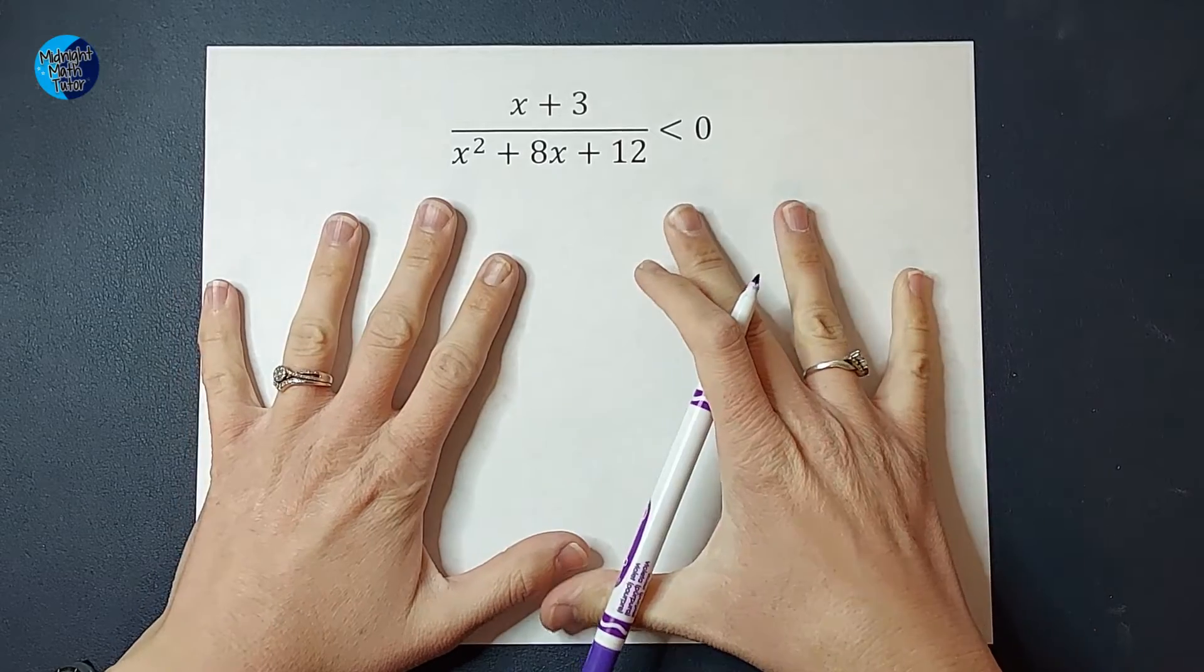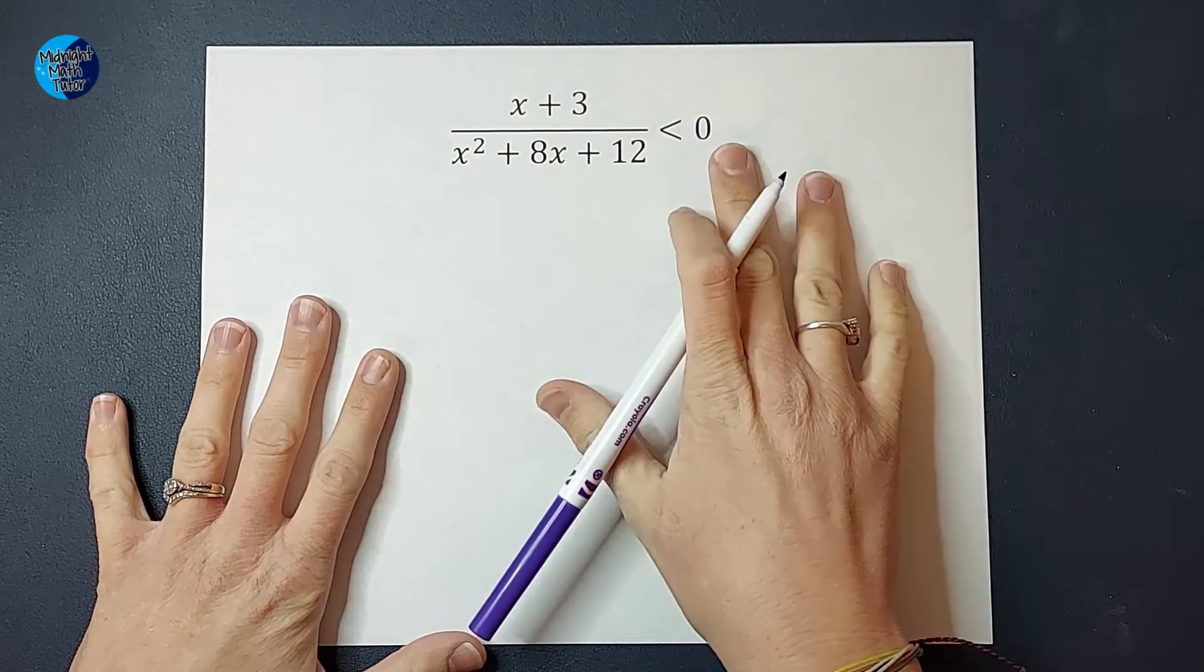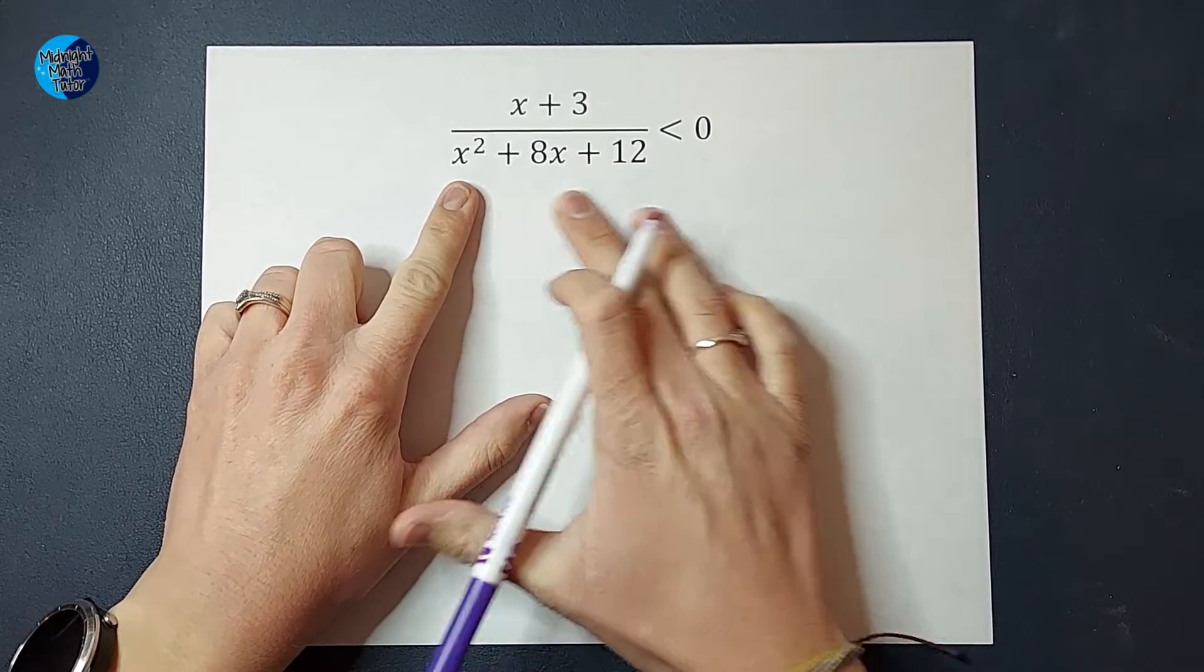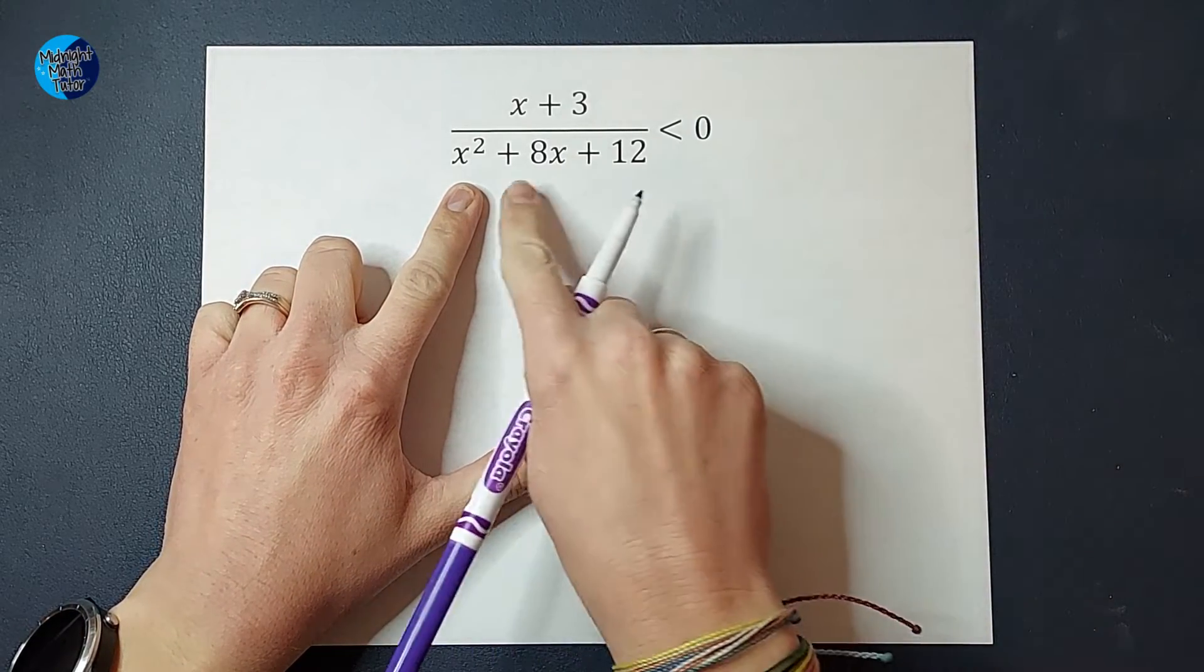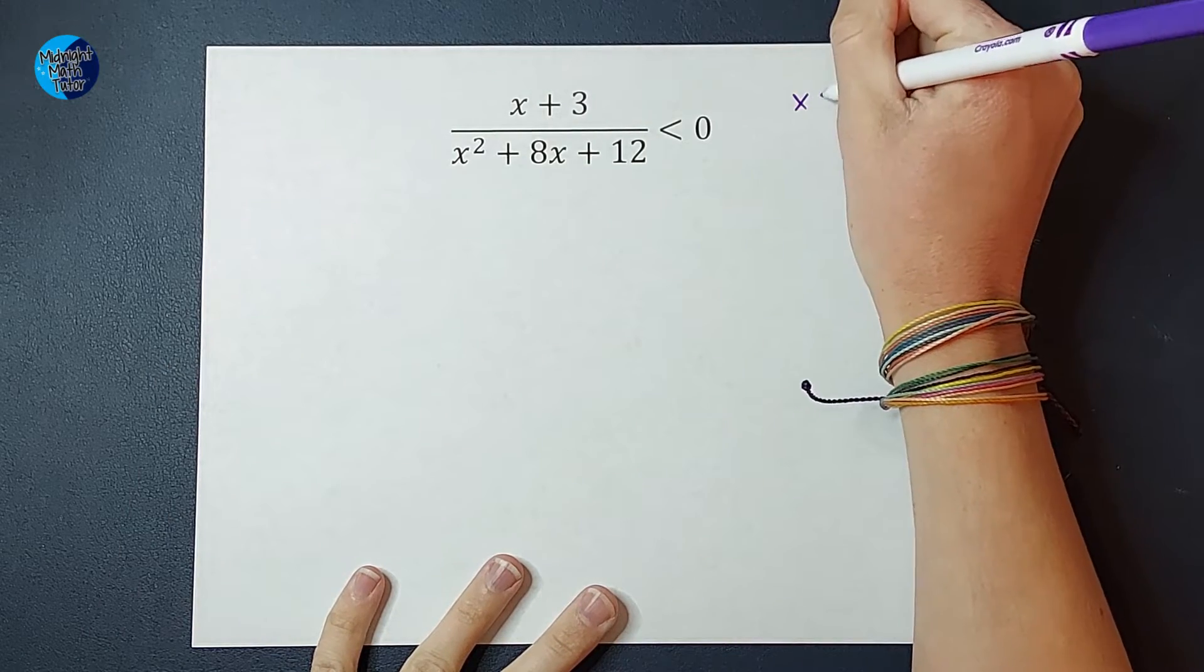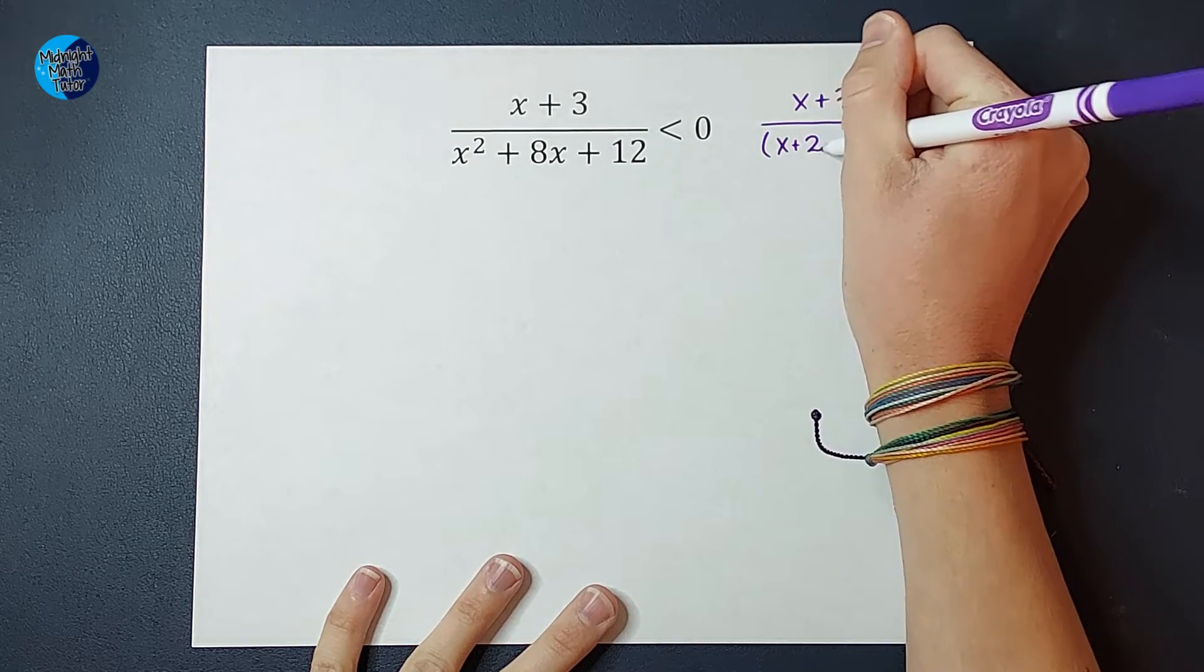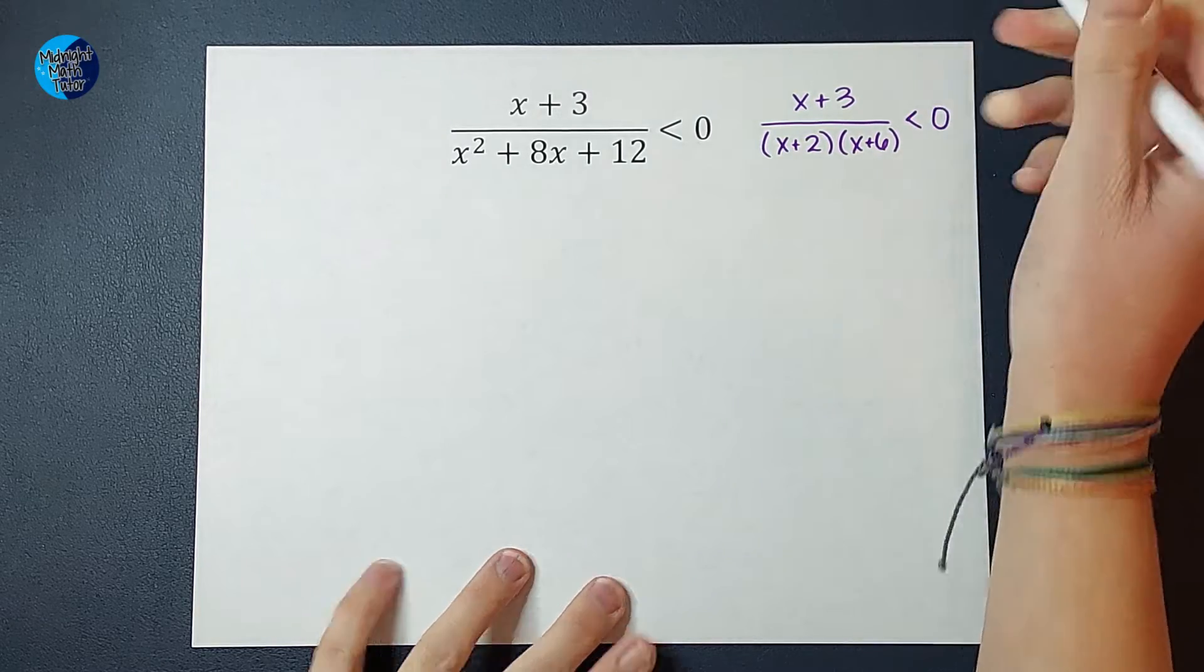Okay, as we are doing this, it is easiest to solve these when we have everything on one side and zero on the other side. So here we're good. All right, the next thing I'm going to do is factor this bottom part. So if you need a factoring review, I will link one in the corner for you, but I'm going to tell you that this is going to factor to x plus 2 times x plus 6. All right, and we're still less than zero.